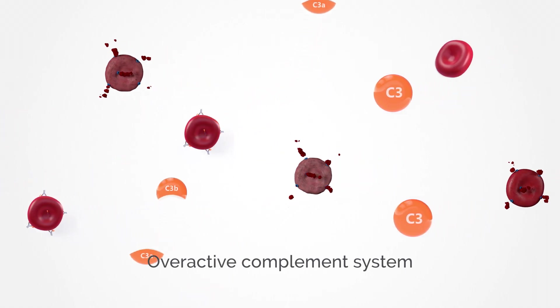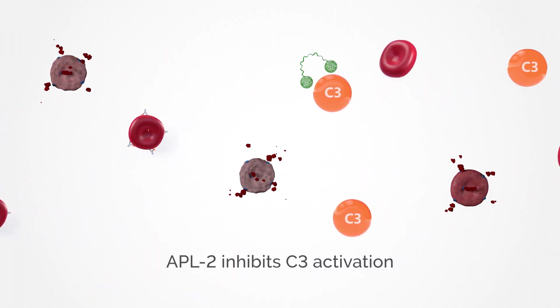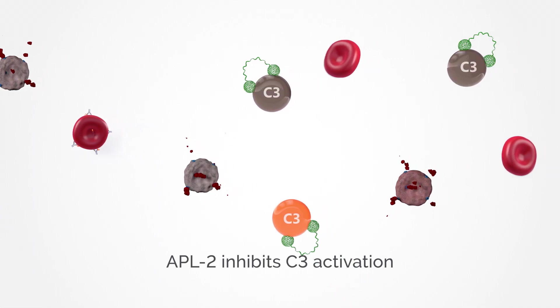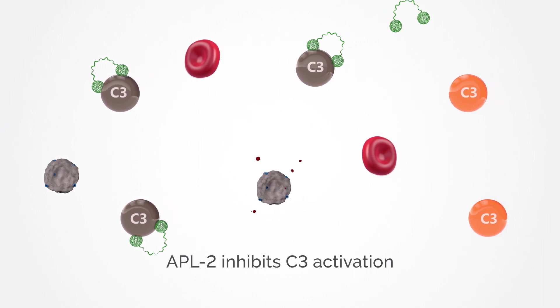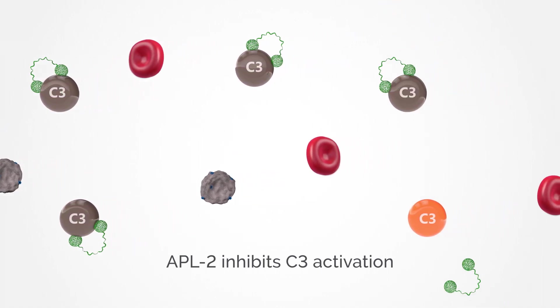The peptide portion of APL2 binds to enough C3 to prevent it from completing the complement cascade, helping the body regain control by preventing excessive complement activity, and protecting it from abnormal immune attacks.